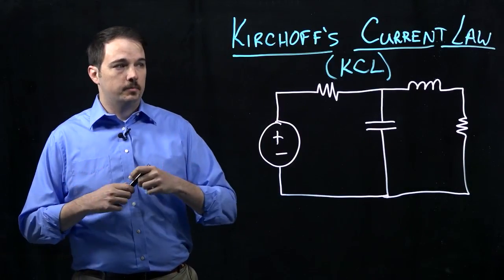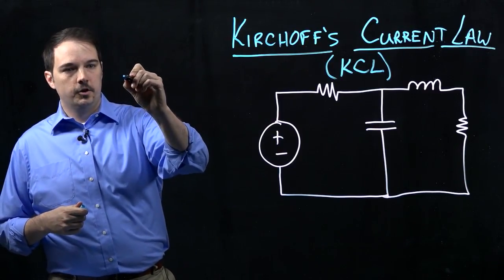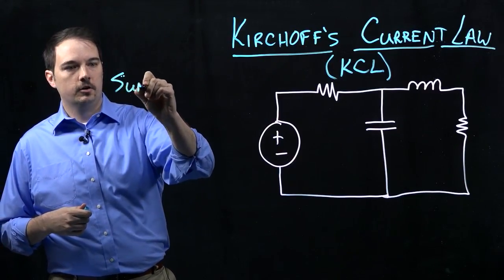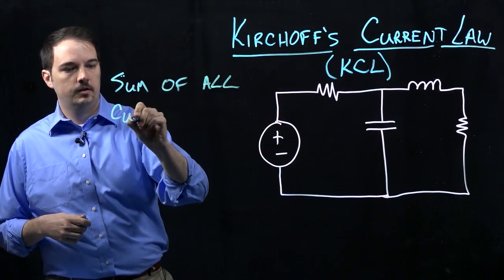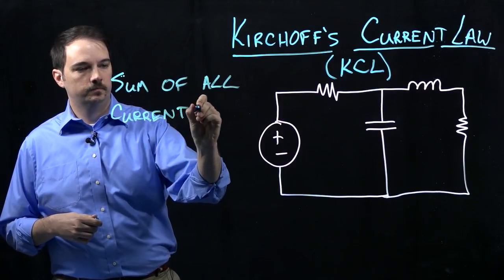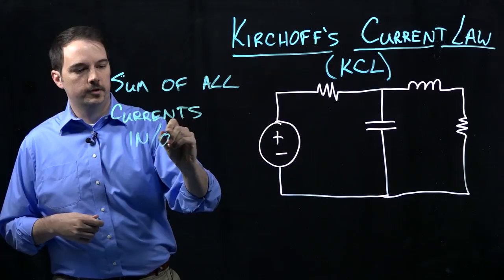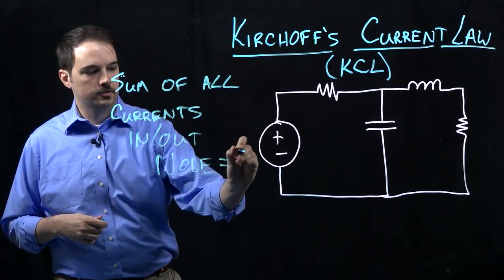The basic idea behind what Kirchhoff came up with is this: the sum of all currents that come into or out of a node has to be equal to zero, has to sum to zero.